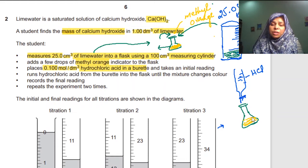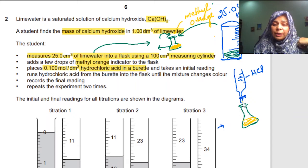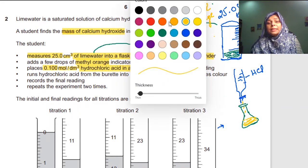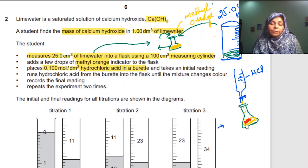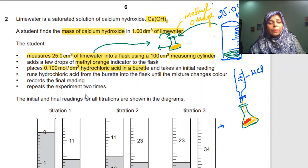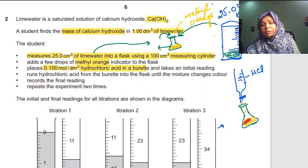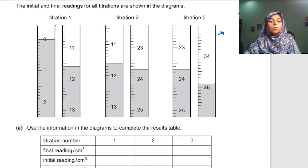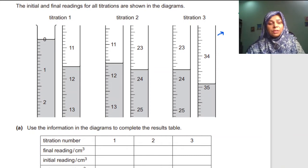Methyl orange turns the solution yellow. After adding HCl dropwise, the color will change — at the endpoint the solution turns red or orange. The initial and final burette readings for all titrations are given, and we will move towards the calculations by filling the table using these readings.